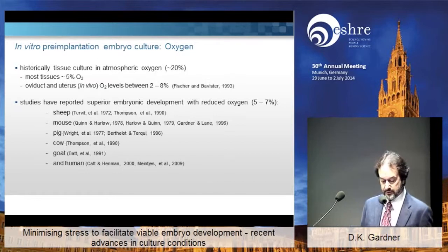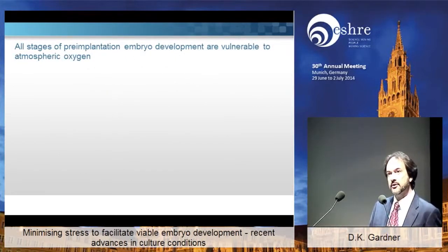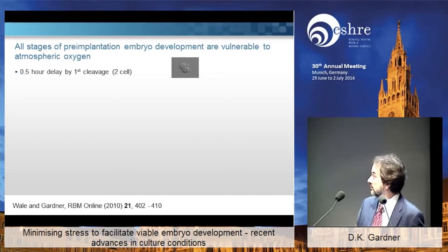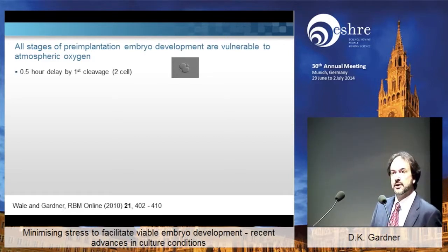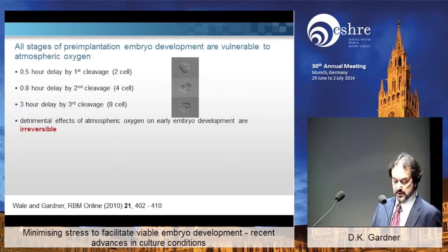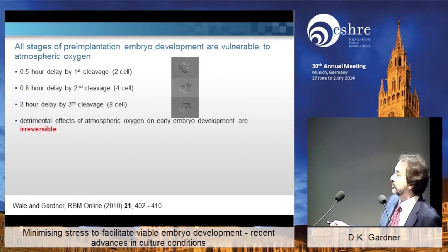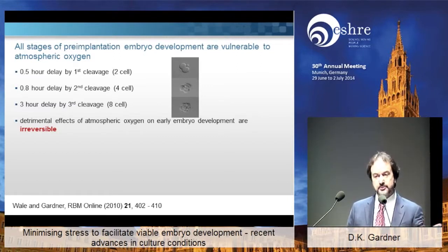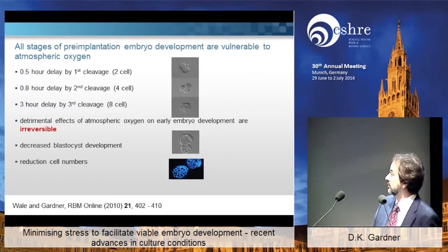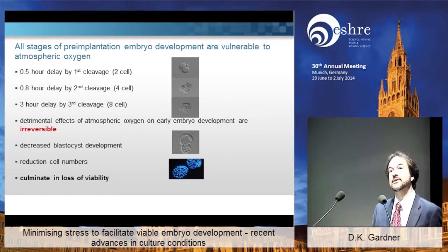There's some very nice work done on the human, and Marius Menkies did a very elegant study published in Fertility and Sterility. All stages are vulnerable to oxygen. This was a time-lapse study — my graduate student Petra Whale used time-lapse to compare 20% to 5% oxygen. By the first cleavage division there was a delay, and this delay got bigger and bigger up to the eight-cell stage. She did crossover experiments and found the detrimental effects were irreversible — if an embryo ever sees 20% oxygen in culture, you have a serious problem. You always end up with lower cell numbers in your blastocysts, culminating in a loss of viability.